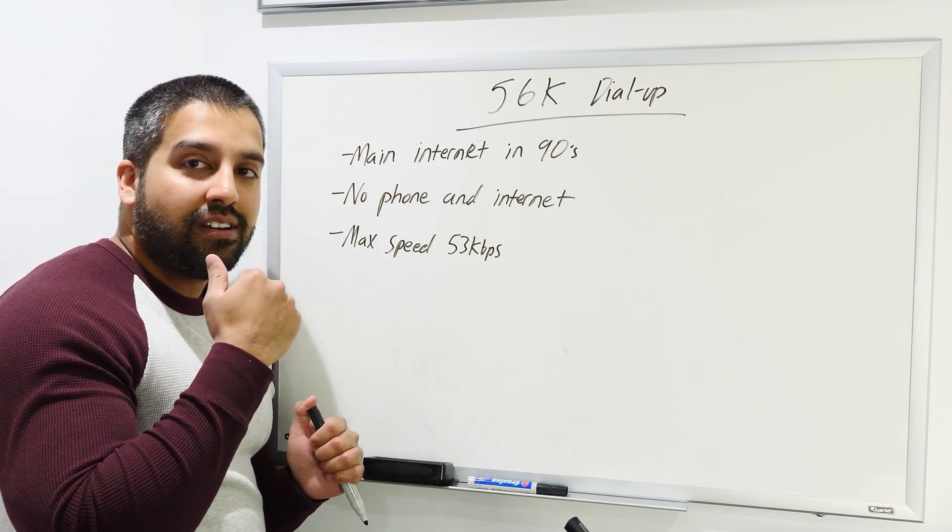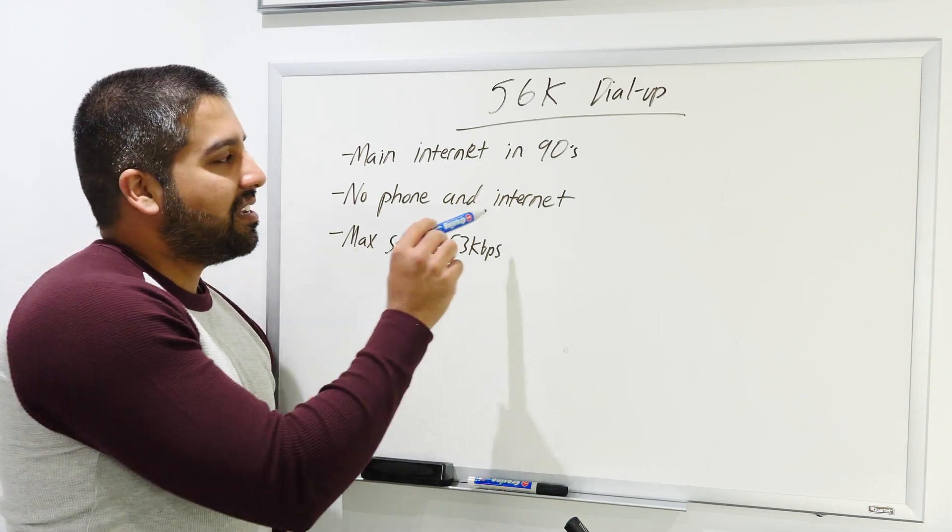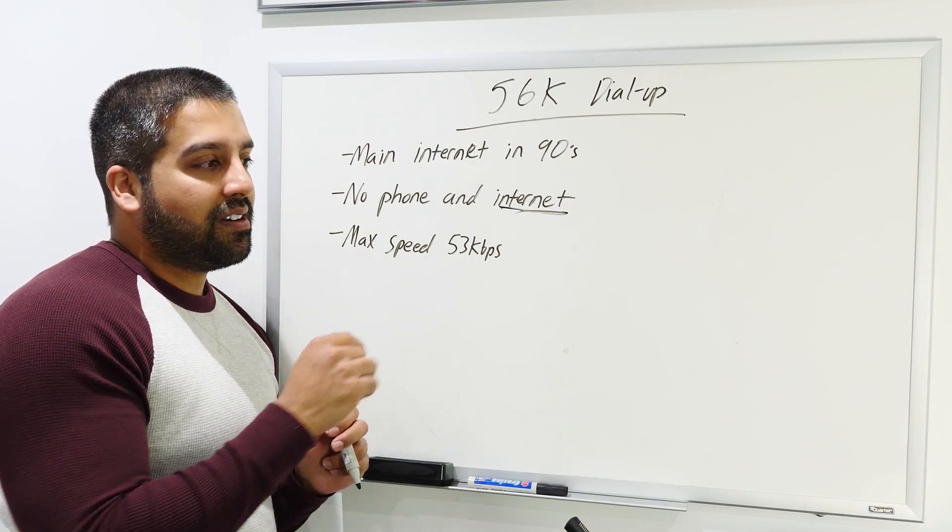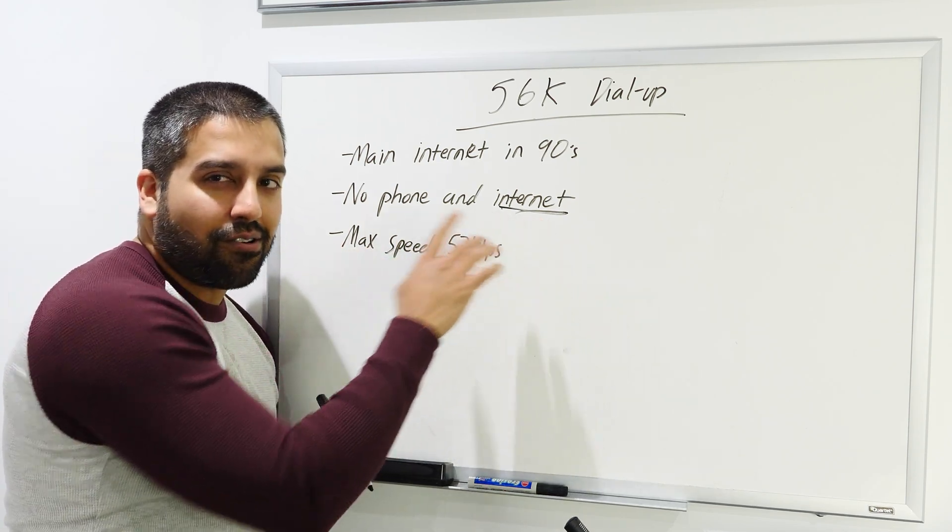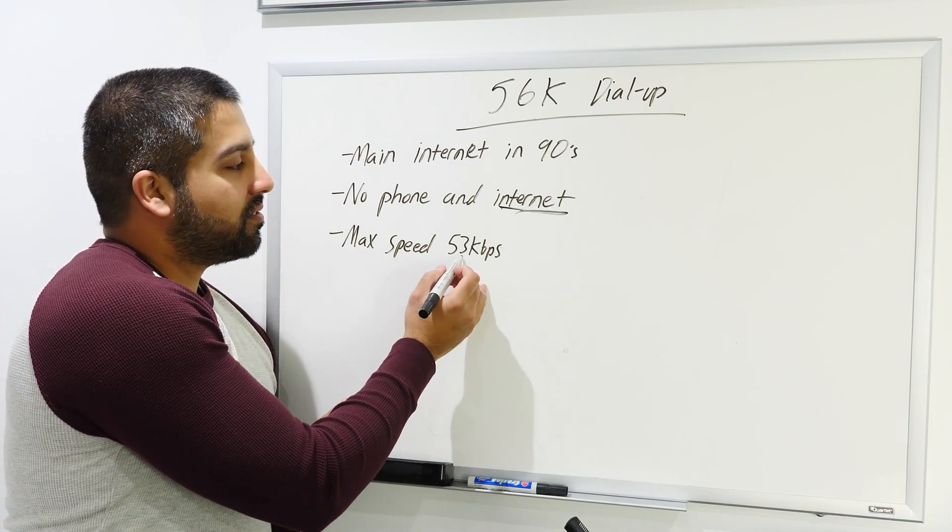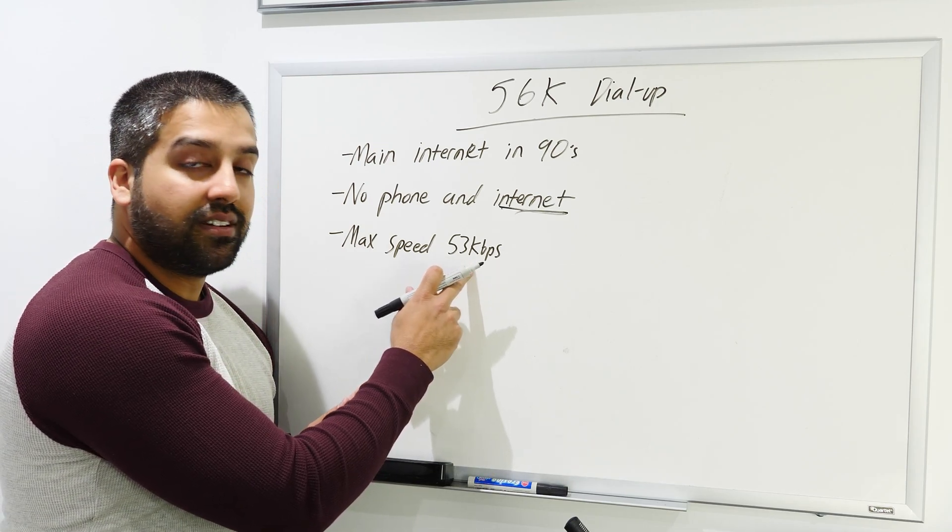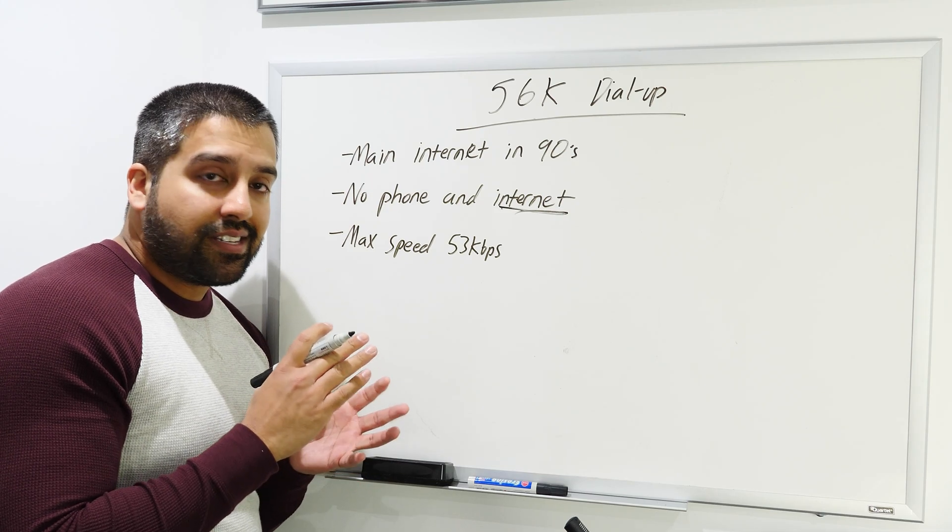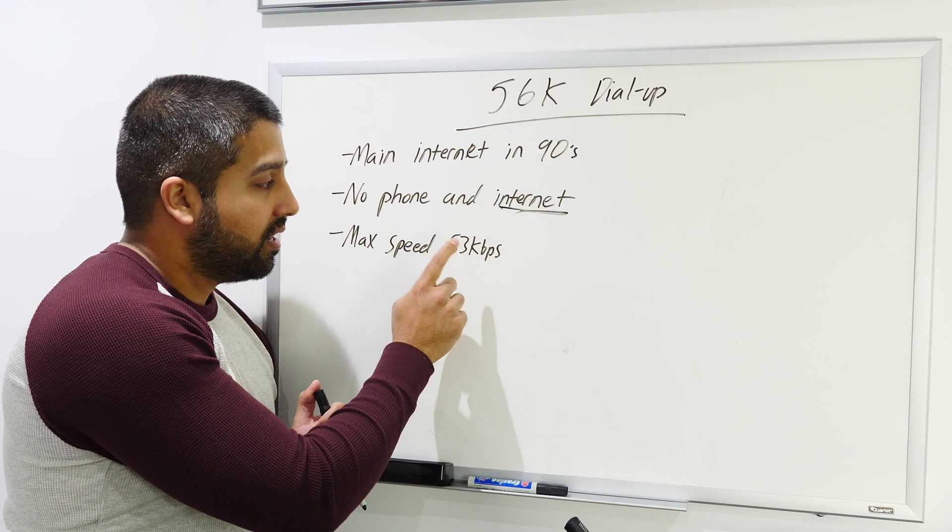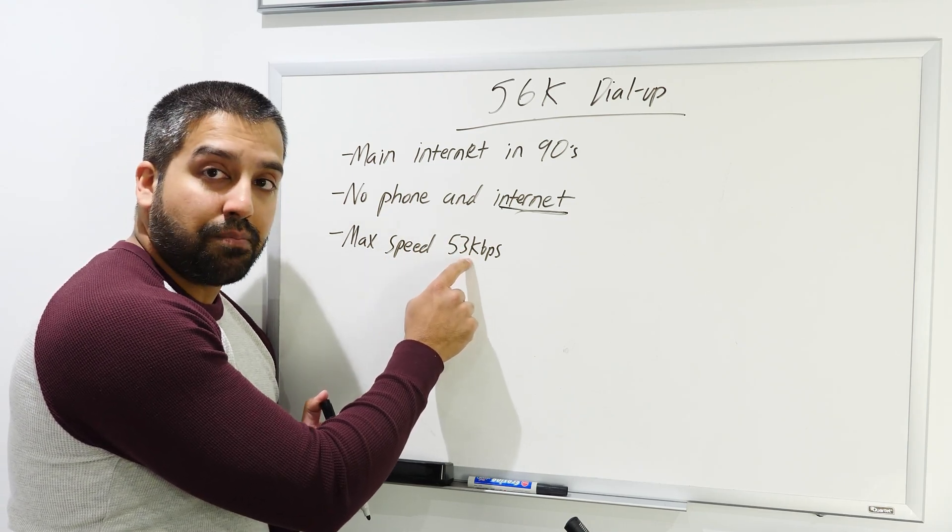You cannot use the phone and internet at the same time. Because it used your phone line, if someone happened to pick up a phone in your house it would disconnect the internet. The max speed was only 53 kilobytes per second. Even back in the day when websites were really simple and condensed, it still took forever to download them. Could you imagine going to YouTube today on this? I'm sure there are people in North America that still use dial-up because that's all they have.